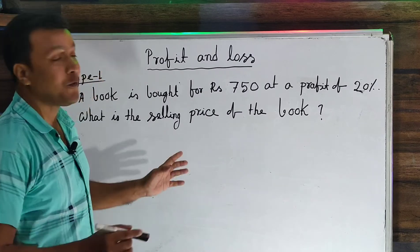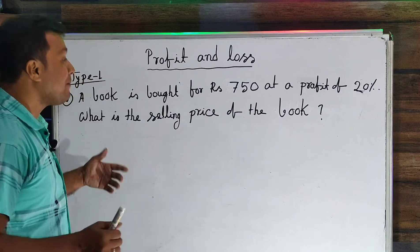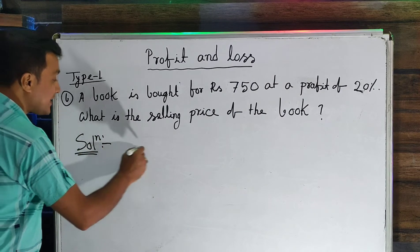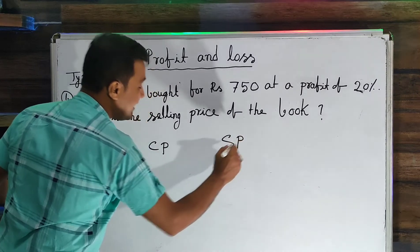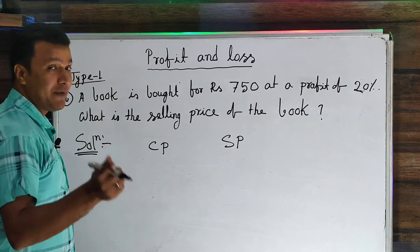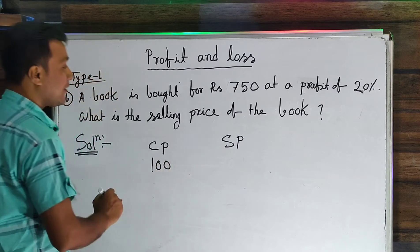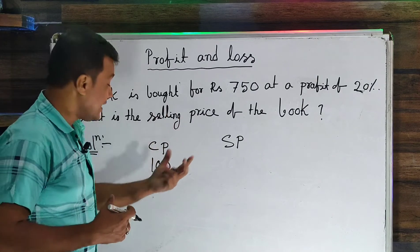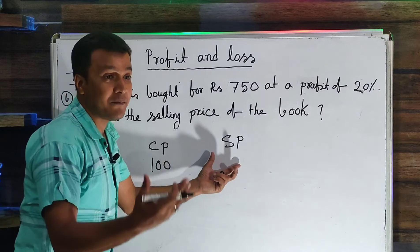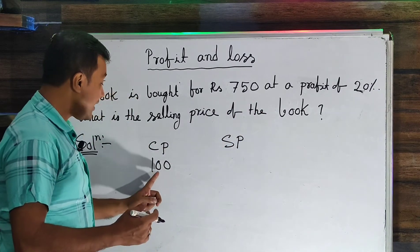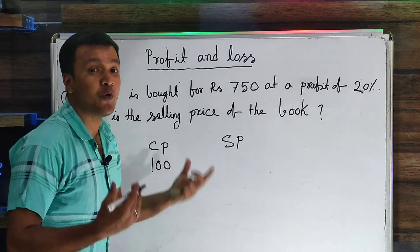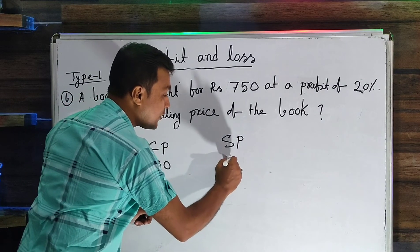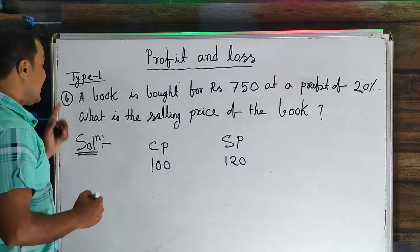Next question: We have to learn what is the selling price. Because your profit is 20%, if you are 100 and you get 20% profit, then you are 120%.